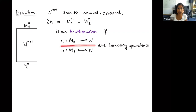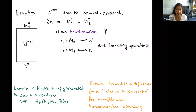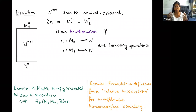An h-cobordism is a special type of cobordism. The requirement is that the inclusion maps on the boundary components are homotopy equivalences. So the slogan is that an h-cobordism is a cobordism that, up to homotopy, looks like a product. In the case of simply connected manifolds, this can be characterized in terms of relative homology. There's also a notion of a relative h-cobordism for manifolds with homeomorphic boundary.